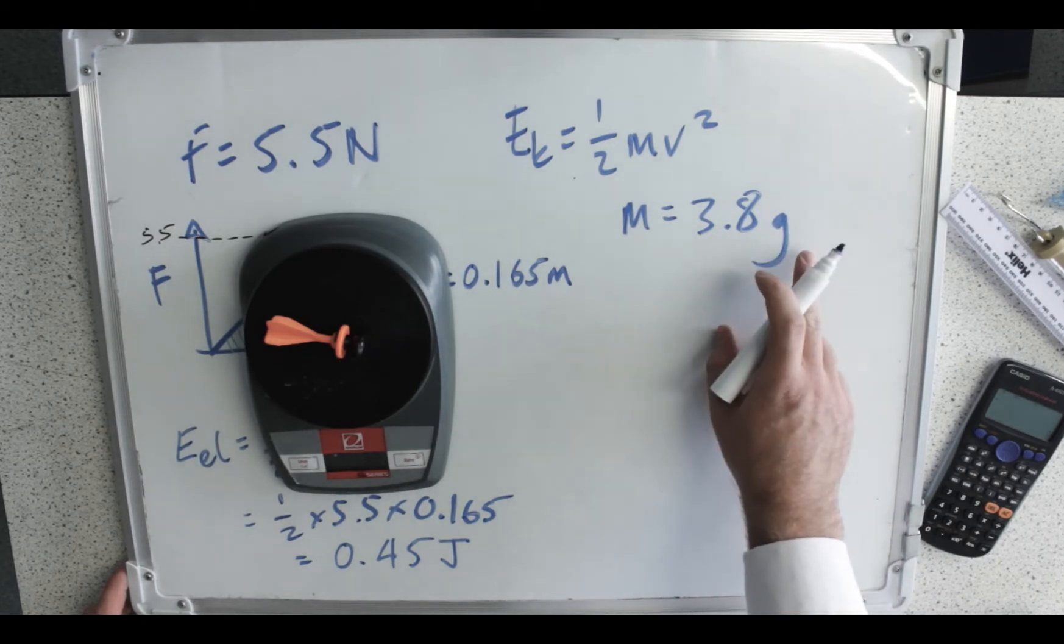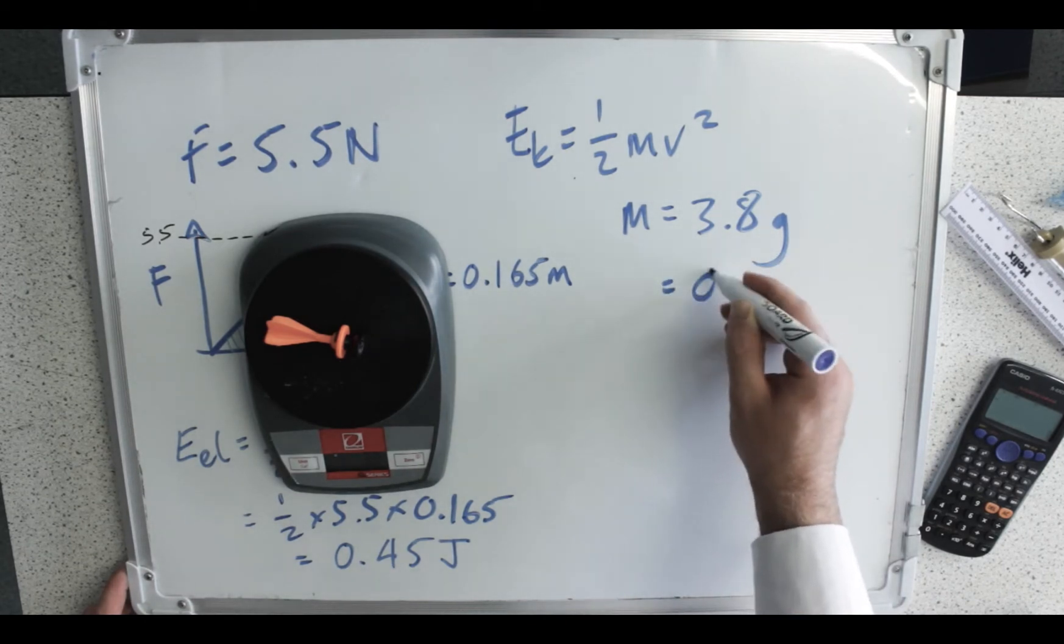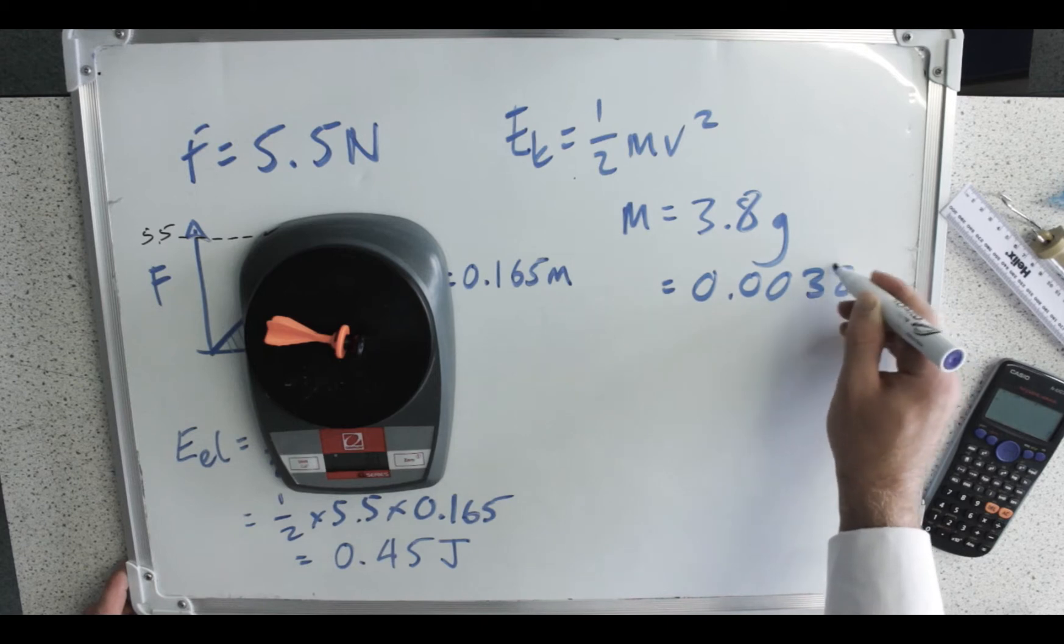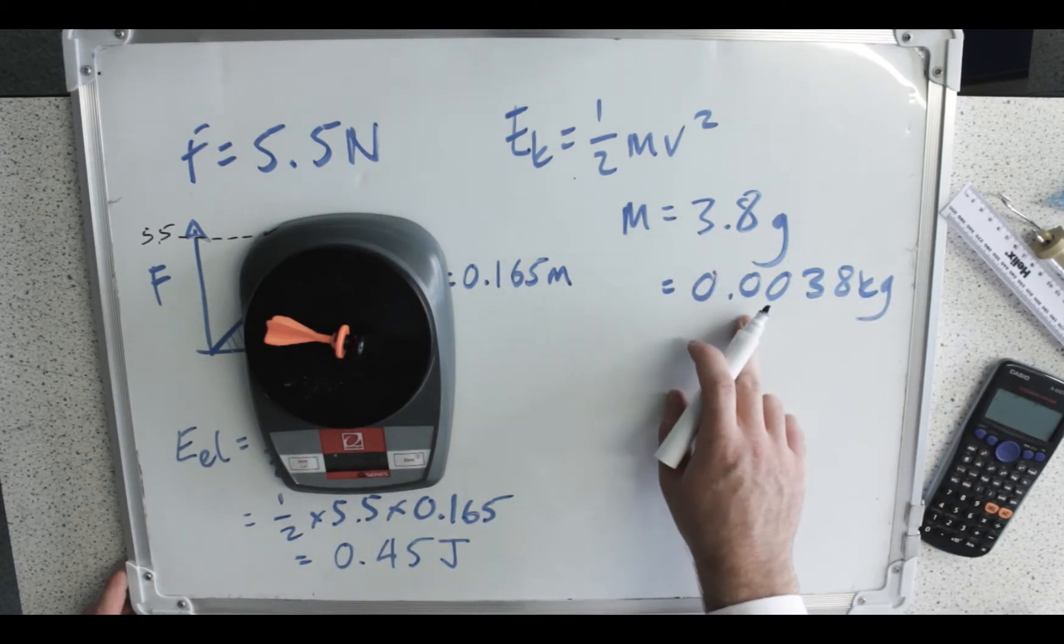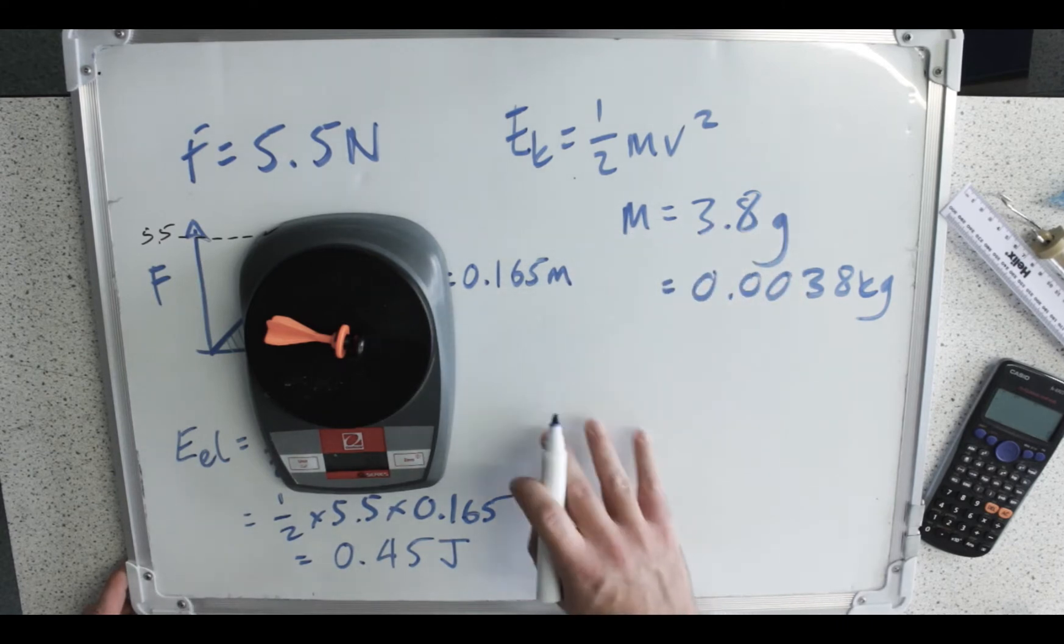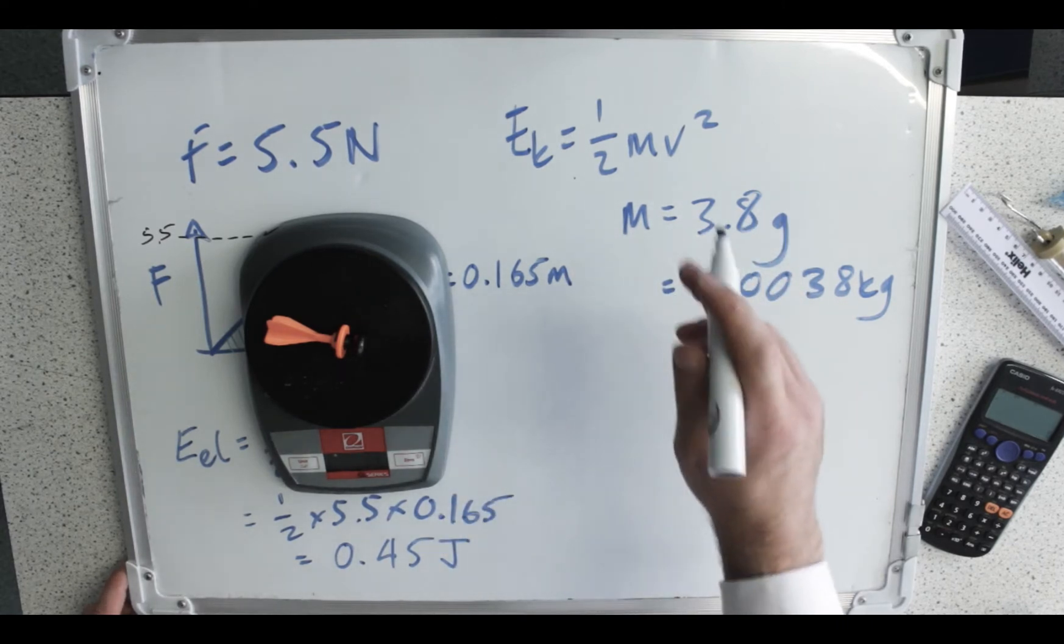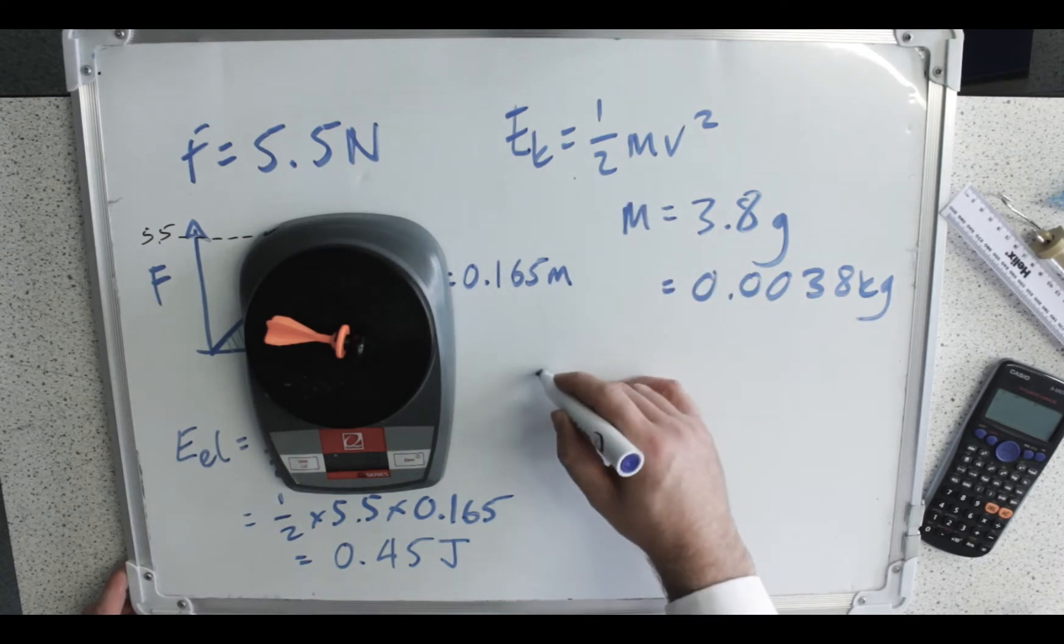And once again, we don't want to use grams, we want to use kilograms. So before I even reach for a calculator or do any other working, convert that into kilograms just by dividing it by a thousand, or moving the decimal place three times. Easy peasy so far. And then we want to work out V, which is the velocity.